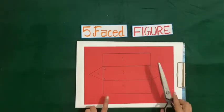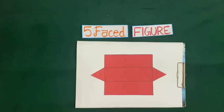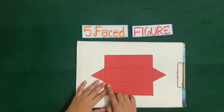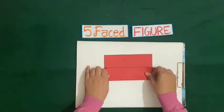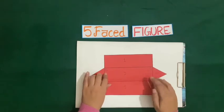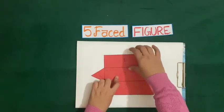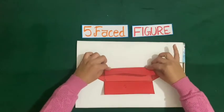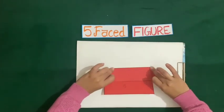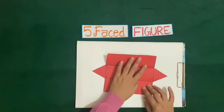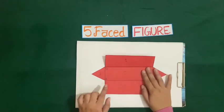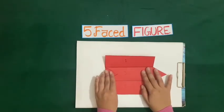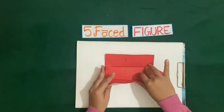Now let us cut this diagram with help of scissor. Now we will fold this along the sides A-B, then along the sides C-D, then fold it along the sides B-C, and fold it along the sides A-D. Now let us join this.